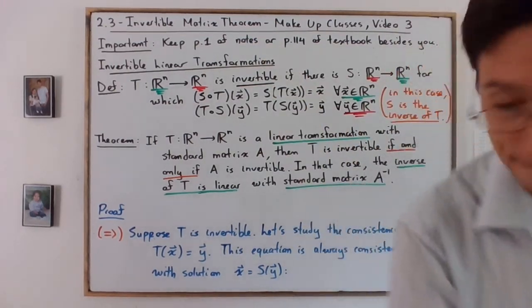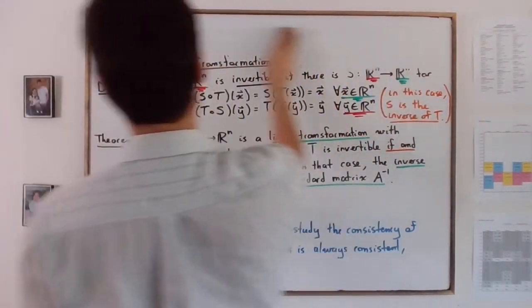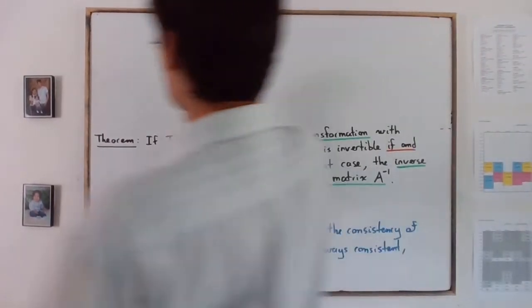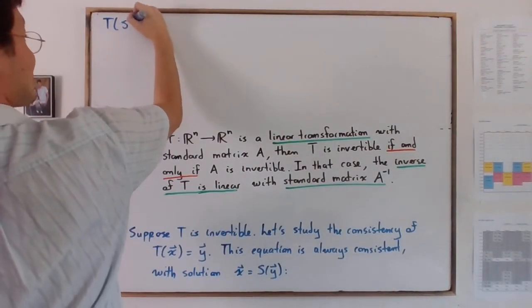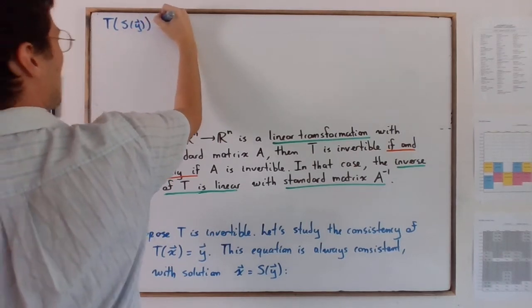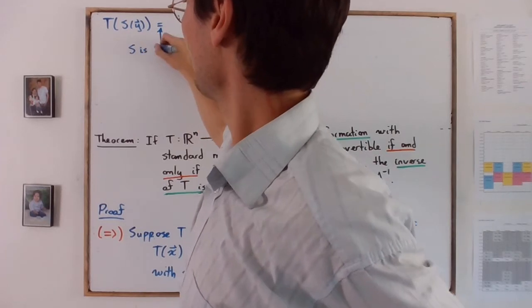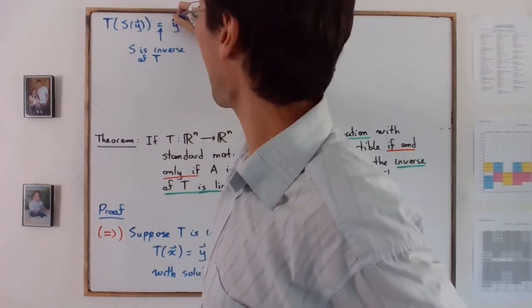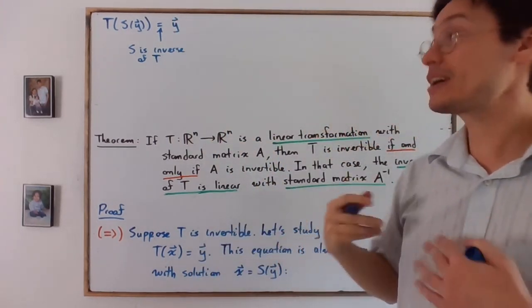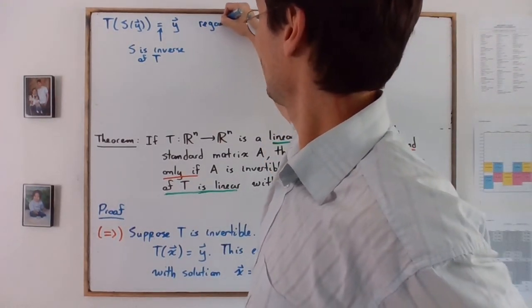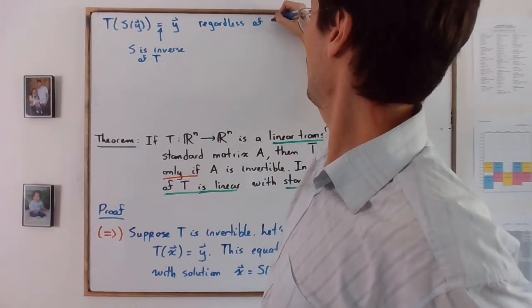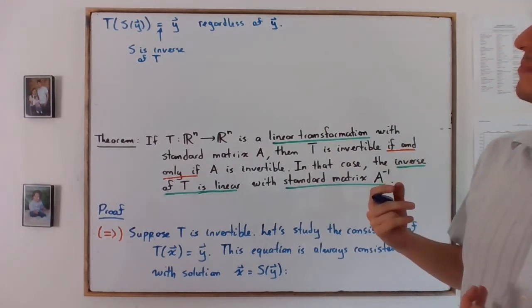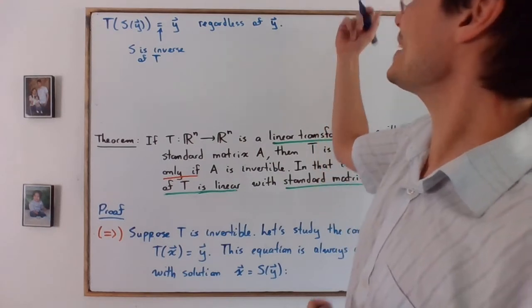T of S of y, because S is the inverse of T, will actually just give y. And this is true regardless of y. So what does it mean? It means that T is onto.